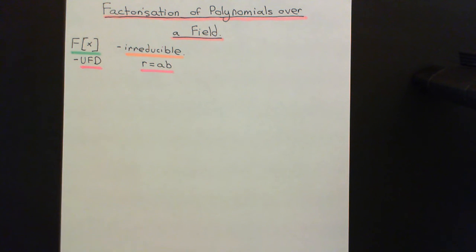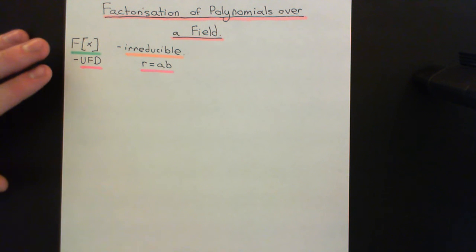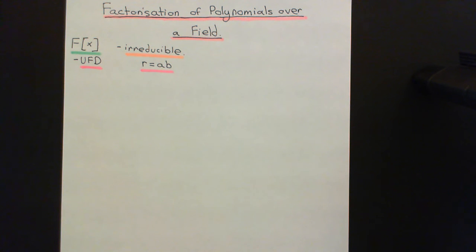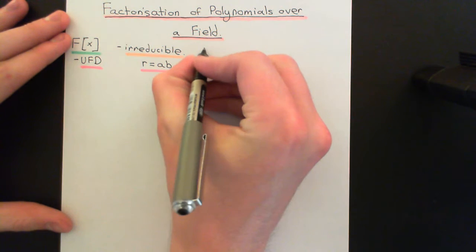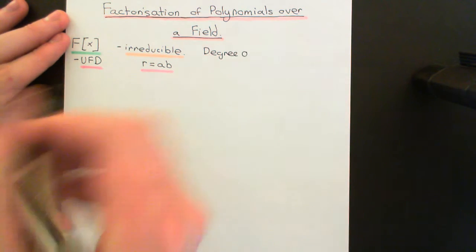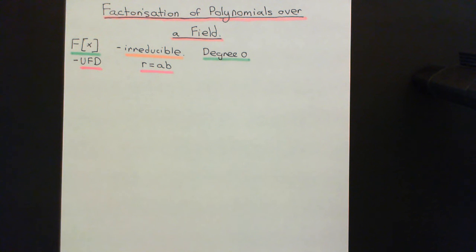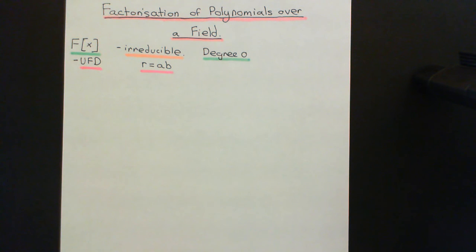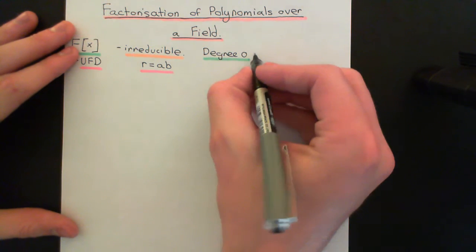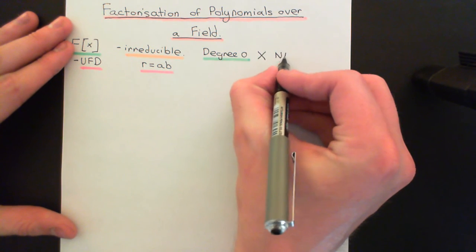For the zero polynomial and the constant polynomials, we cannot apply the reducible/irreducible classification, because constant polynomials are all units and zero is the zero element. In a ring of polynomials over a field F, all constant polynomials are units — that sub-portion is effectively the same as the field F, so all those elements apart from zero have a multiplicative inverse. So for degree zero polynomials, the answer is not applicable — they are neither reducible nor irreducible.